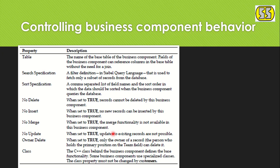Just as we have field-level properties, we have BC-level properties. Every BC has a Table property where we provide the associated table. Search Specification lets us put a filter criteria — written in Siebel Query Language — so the BC fetches only specific records rather than all records in the database.